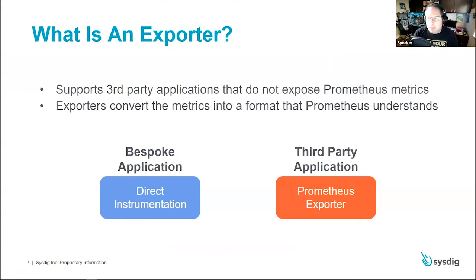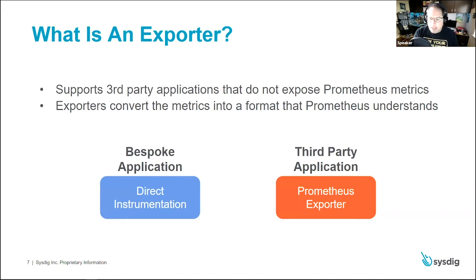Exporters are for third-party applications that don't expose Prometheus metrics natively. Some applications do have that option, but many don't — and it can be difficult for a maintainer of a large project to add Prometheus instrumentation. So the community has developed exporters that convert metrics pulled out of a particular application into a format that Prometheus understands. If you're coding your own application, you can do direct instrumentation with Prometheus and don't necessarily need an exporter, but for third-party applications you will in most cases.